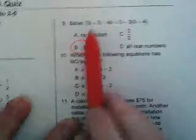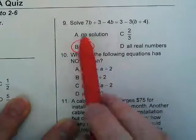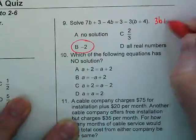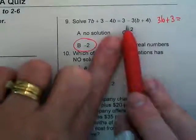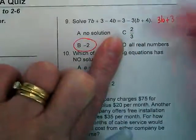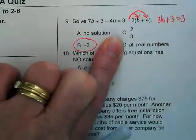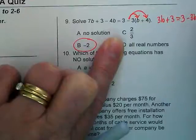So when I rewrite this part, 7b and negative 4b is going to get combined as like terms and become what? 3b plus 3. And then on the right side, this 3 is going to stay, but this negative 3 has to be distributed to both of these terms. So we end up with negative 3b and negative 12.